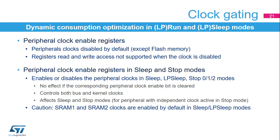The dynamic power consumption can be optimized by using peripheral clock gating. Each peripheral clock can be gated on or off in run and low-power run mode. By default, the peripheral's clock is disabled, except the flash memory clock, which is enabled. When a peripheral's clock is disabled, the peripheral's registers cannot be read or written. Other registers allow the configuration of the peripheral's clock during sleep and low-power sleep modes, and also in stop 0, stop 1, and stop 2 modes for peripherals with an independent clock active in stop modes. By default, the SRAM1, SRAM2, and CCM SRAM clocks are enabled in sleep and low-power sleep modes; if they are not needed, the SRAM clock enable bits should be disabled to reduce power consumption.